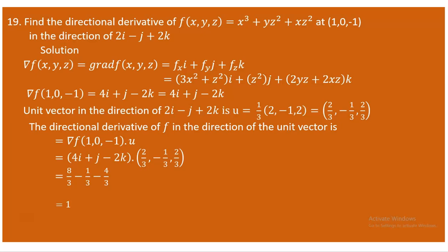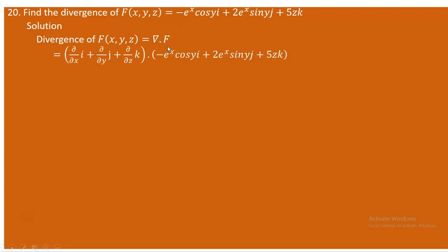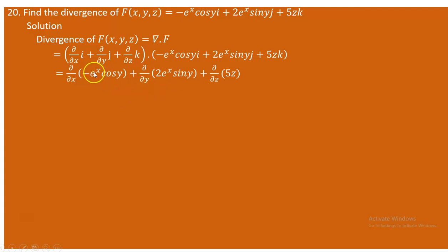Question 20 asks us to find the divergence of a vector field. The divergence of a vector field gives a scalar output, and it is defined as the dot product of the del operator with the vector function. The del operator is the partial derivative with respect to x along i, plus partial derivative with respect to y along j, plus partial derivative with respect to z along k.